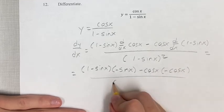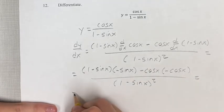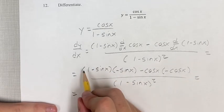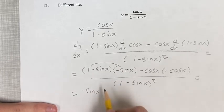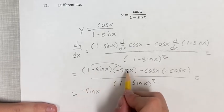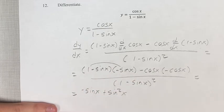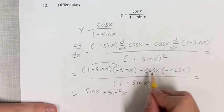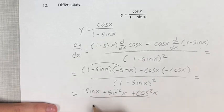This is over 1 minus sine x squared. All right, so distributing this, 1 times negative sine x is negative sine x, plus sine squared x, where the negatives cancel each other. Negative sine times negative sine is positive sine squared. Similar thing here, negative cosine times negative cosine is positive cosine squared. This is over 1 minus sine squared x.